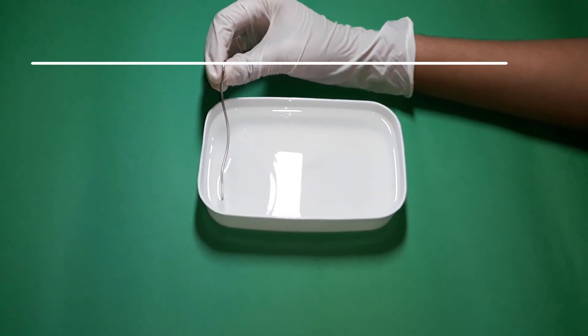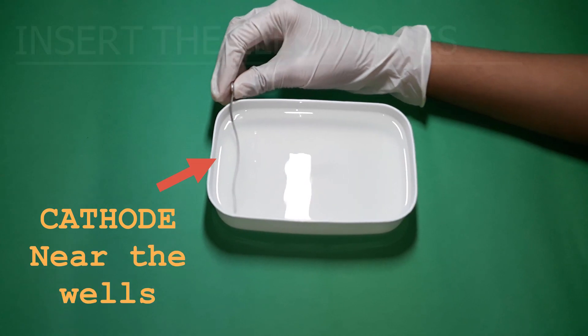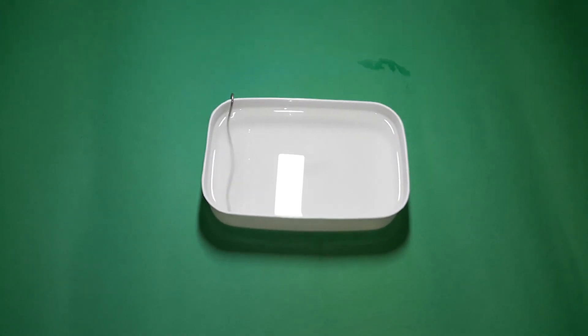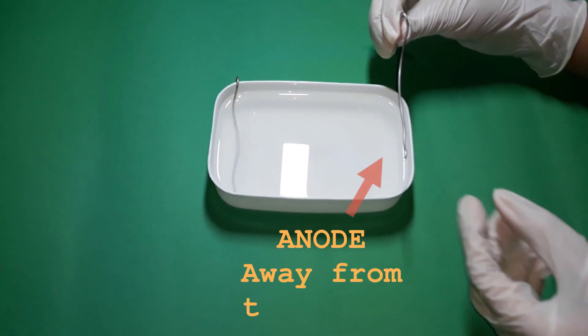It's time to insert the electrodes. Insert the negative electrode or cathode at the end nearby the wells and insert the positive electrode or anode at the end away from the wells.